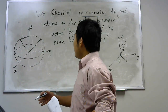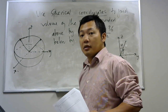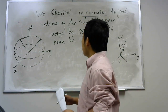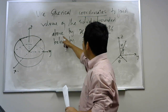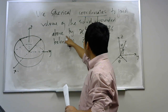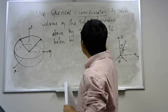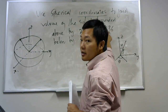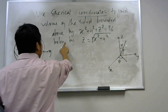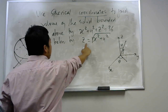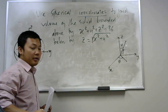In this video, I will show you how to use spherical coordinates to find the volume of a solid region bounded by some surfaces. In this case, our solid is bounded above by a sphere centered at the origin with radius equal to 6, and below by z equal to the square root of x squared plus y squared.